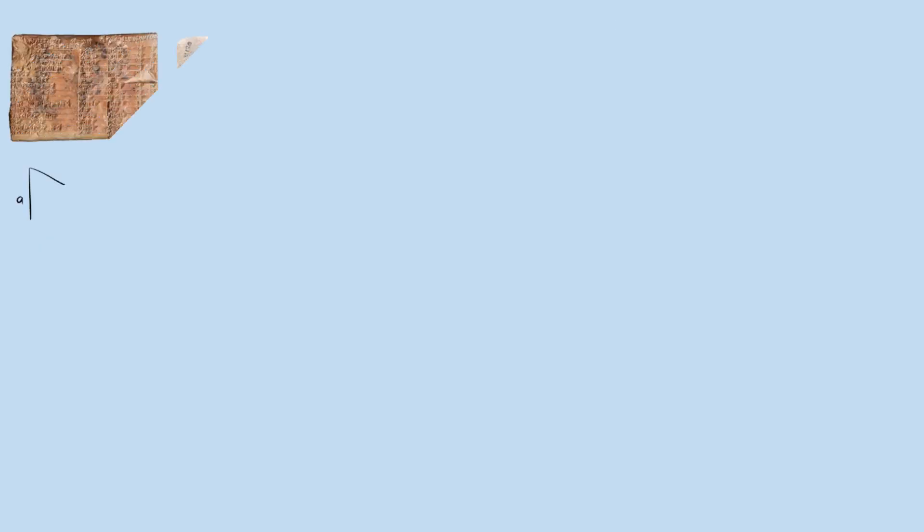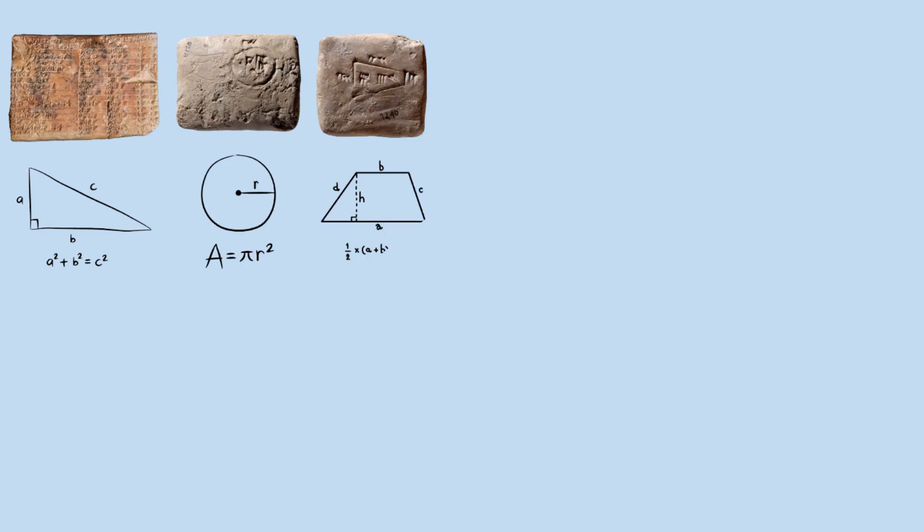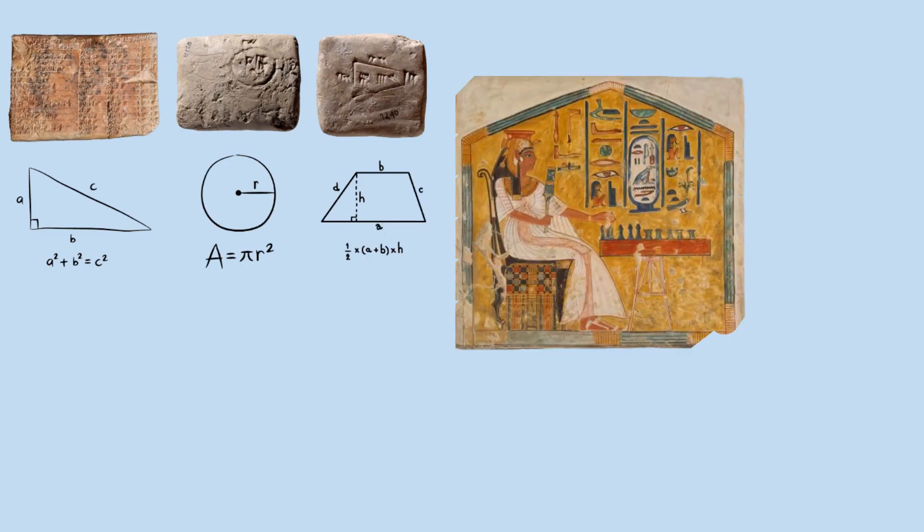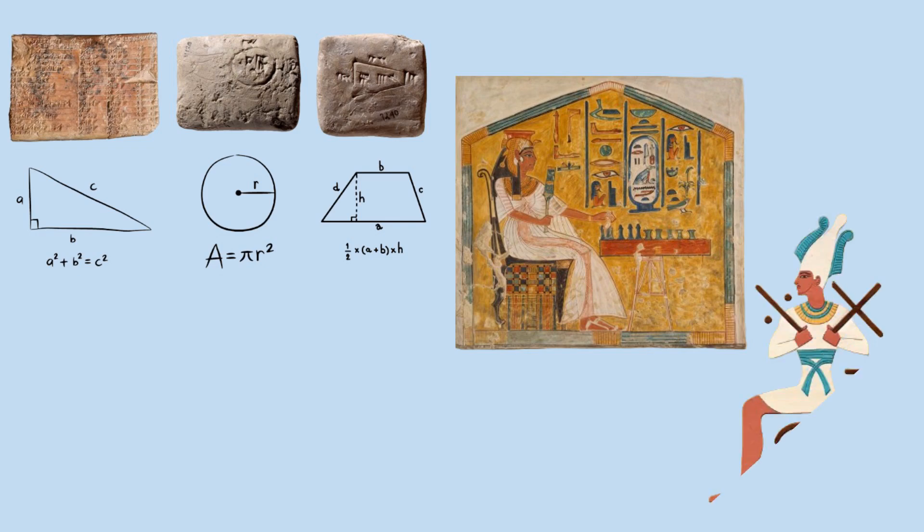What's remarkable is that humans were essentially doing advanced mathematics long before they had the formal language to describe it. When ancient players discovered winning strategies for these games, they were actually conducting sophisticated analysis of discrete mathematical structures.